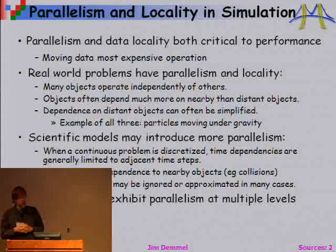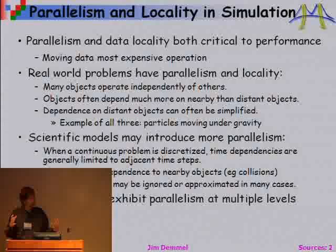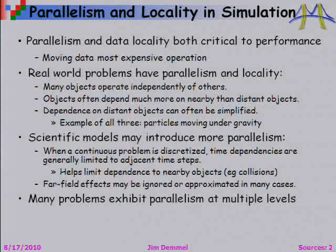The good news is that many real-world problems have a lot of parallelism and locality if you just look for it. In the real world, many objects operate independently of one another — you're going to decide where to go to lunch completely independently, and there's a lot of that. So we can have different processors for different objects. Also, objects tend to depend on nearby objects more than distant ones. That's true socially, but also if you're doing a van der Waals simulation — particles close to you have a much larger influence than particles that are far away. That's a ubiquitous phenomenon that will let us exploit locality.